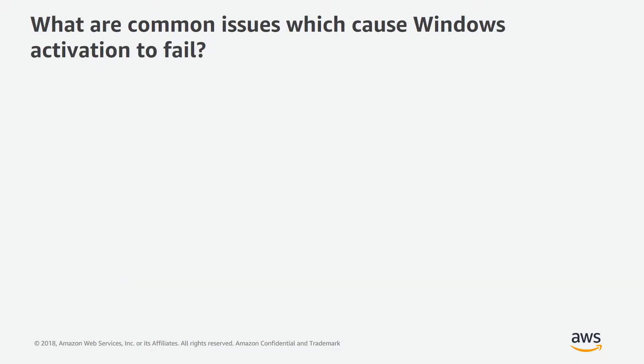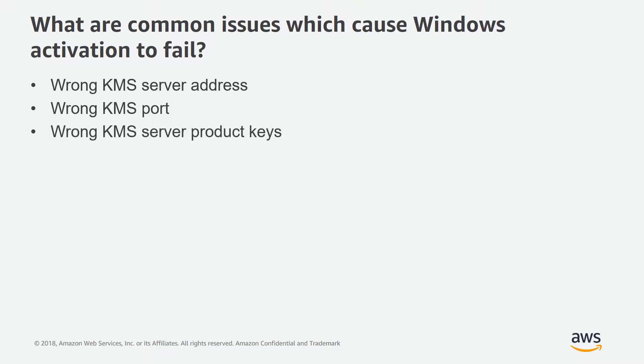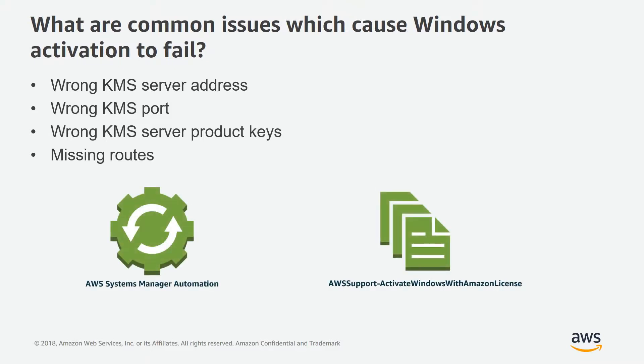What are common issues which cause Windows activation to fail? One is wrong KMS server address, wrong KMS ports, wrong KMS server product keys, and also missing routes. All of these can be fixed by using AWS Systems Manager Automation with the AWS Support Activate Windows with Amazon License document. Let's see how this is done in the demo section.